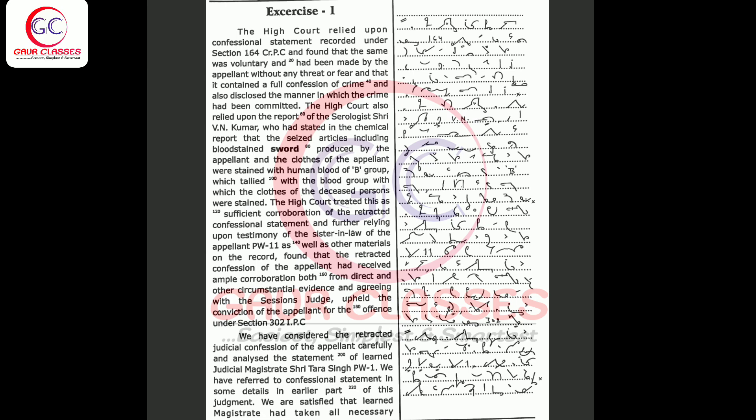It found that the retracted confession of the appellant had received ample corroboration both from direct and other circumstantial evidence and agreeing with the Sessions Judge upheld the conviction of the appellant for the offense under Section 302 IPC.